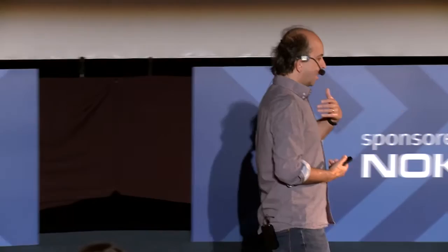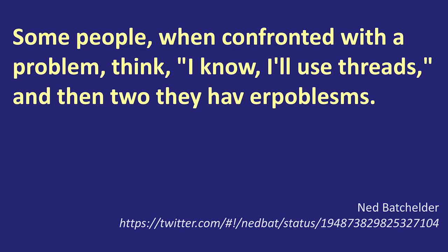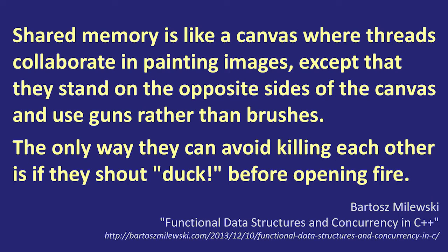These bugs are quite difficult to track down. What is the problem with tracking state? We end up with race conditions. Our natural response is to add locks. Bartosz Milewski has this lovely way of putting it: 'Shared memory is like a canvas where threads collaborate in painting images, except that they stand on opposite sides of the canvas and use guns rather than brushes. The only way they can avoid killing each other is if they shout duck before opening fire.' Welcome to lock-based architectures. But really what I mean is shared mutable state. The minute you introduce locks, you also introduce the possibility for deadlock and livelock.